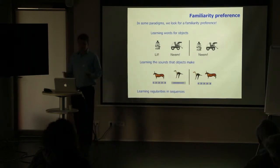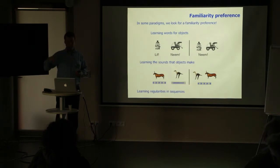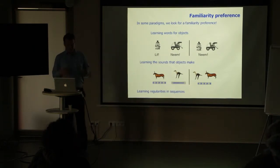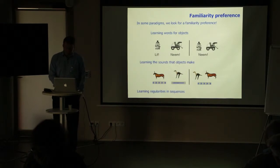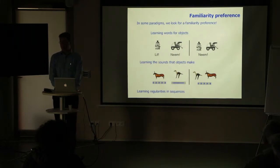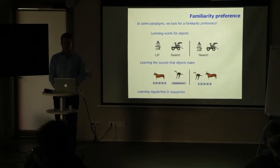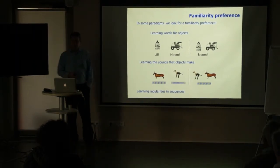We also find familiarity preferences in sequence learning. When infants are played a sequence of syllables and are expected to extract statistical regularities, they orient toward the familiar sequence rather than a novel one. Familiarity preferences are usually controlled for in well-designed studies and are theoretically considered more of an annoyance, but they should certainly play a role in theorizing about preferential looking.